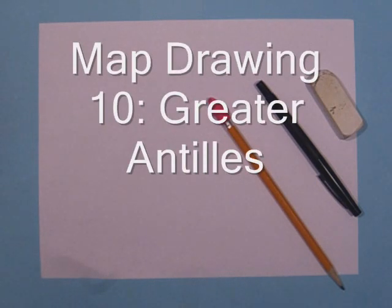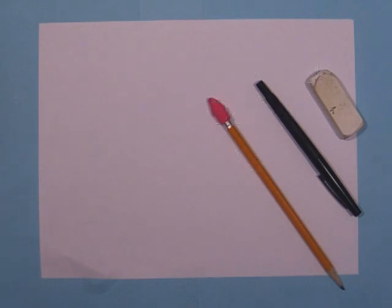This is map drawing 10, the Greater Antilles. The Greater Antilles include Cuba, Hispaniola, Jamaica and Puerto Rico.